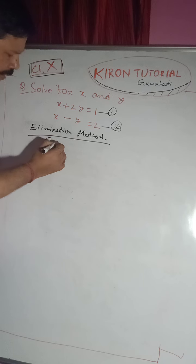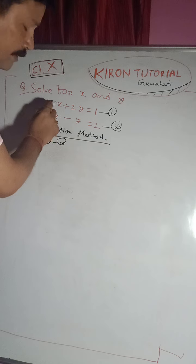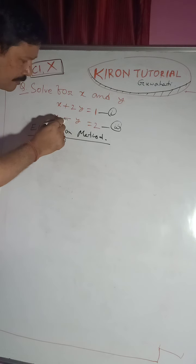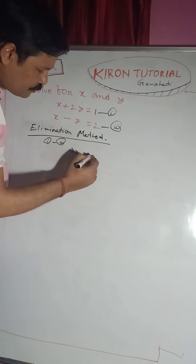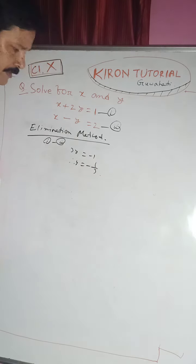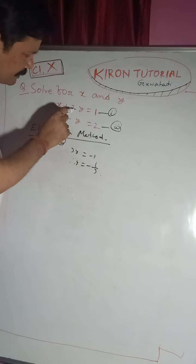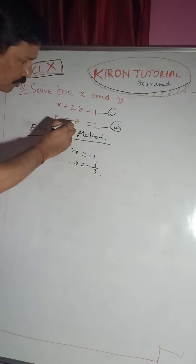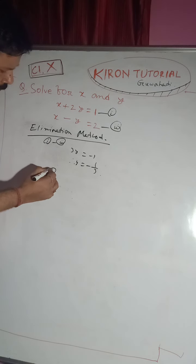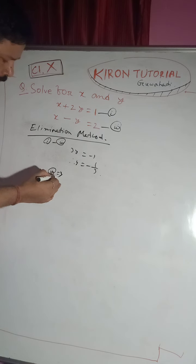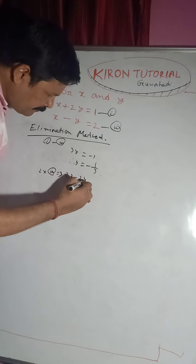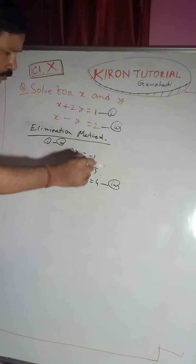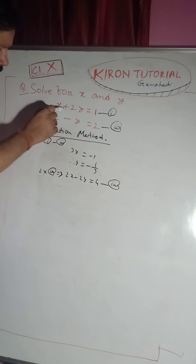In the elimination method, we compare the coefficient of x in both equations. The coefficient of x is 1 in both, and they have the same sign, so we subtract. The coefficient of y is 2 in equation 1 and 1 in equation 2, so we multiply equation 2 by 2 to make the coefficients of y equal. This gives us equation 3: 2x minus 2y equals 4.